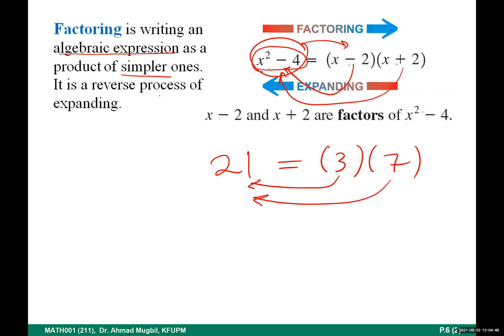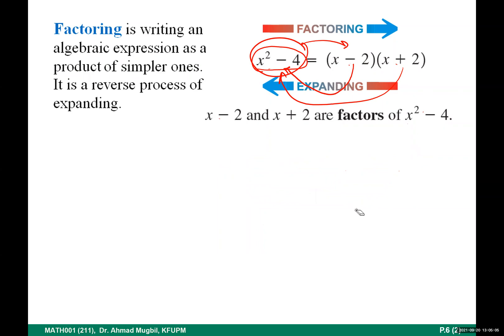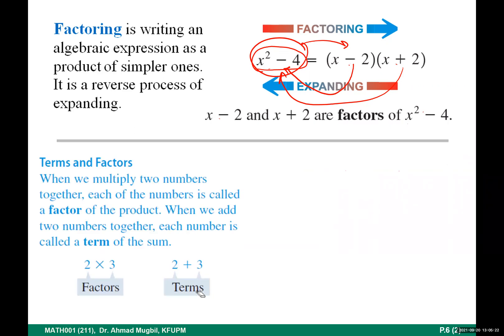The factors must, in the end, be prime to say we have factored completely. We will mention this later — what we mean by a prime polynomial. We know what prime numbers are; this is the fundamental theorem of arithmetic: you can write any natural number as a product of prime numbers. Before starting to factor, you must distinguish between two terminologies: factors and terms. In multiplication, each number is called a factor. In addition or subtraction, each number is called a term.